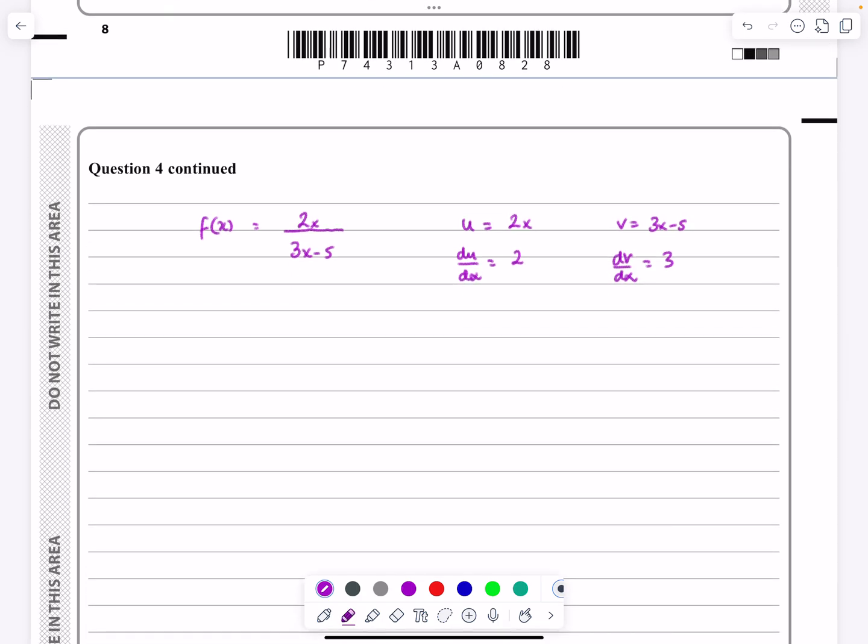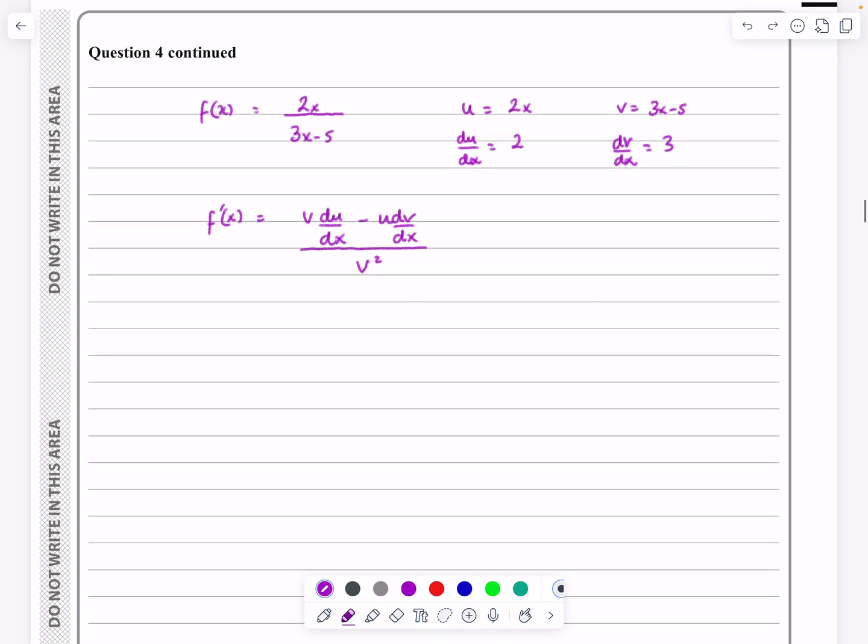And then f dash x is going to be v du by dx minus u dv by dx all over v squared. You may learn that in a different way, but as long as you're following the same process through, I write it down every single time. It makes it a little bit easier for me to remember what I'm doing.